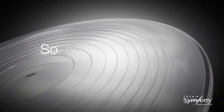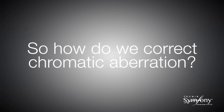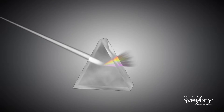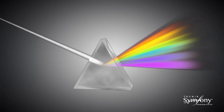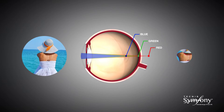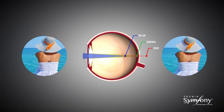Now let us look at how the achromatic technology works to correct chromatic aberration. Visible light is composed of a range of wavelengths that are red at one extreme and blue at the other. The cornea of the natural eye is a refractive lens which is more powerful for blue light than red. The eye can only be in focus for one wavelength at a time, and the remaining wavelengths which are out of focus cause blur and a reduction in contrast vision.